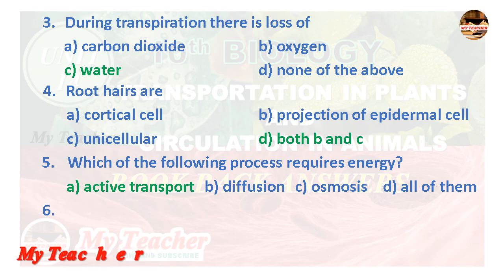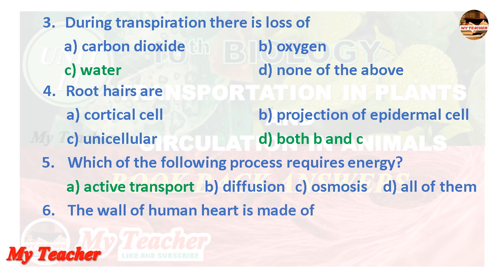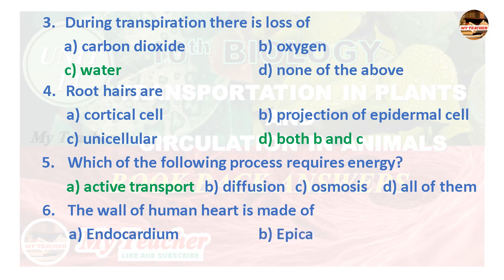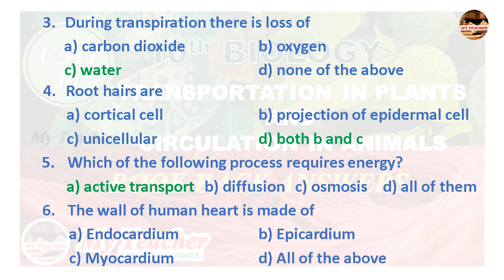Sixth question: The wall of the human heart is made of — A. Endocardium, B. Epicardium, C. Myocardium, D. All of the above. Answer is Option D. All of the above.